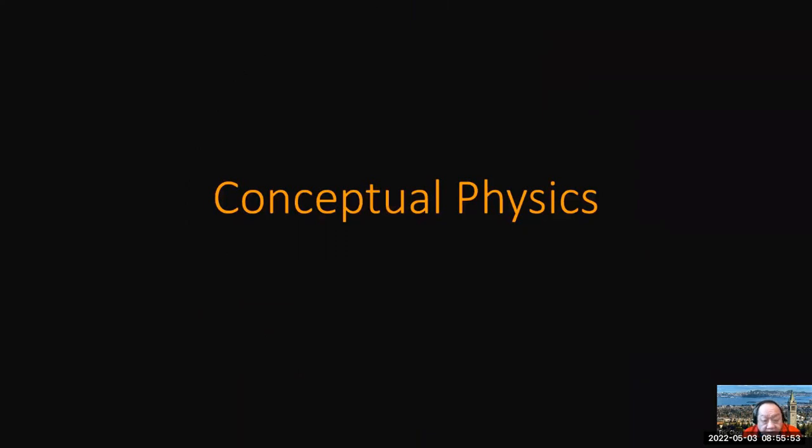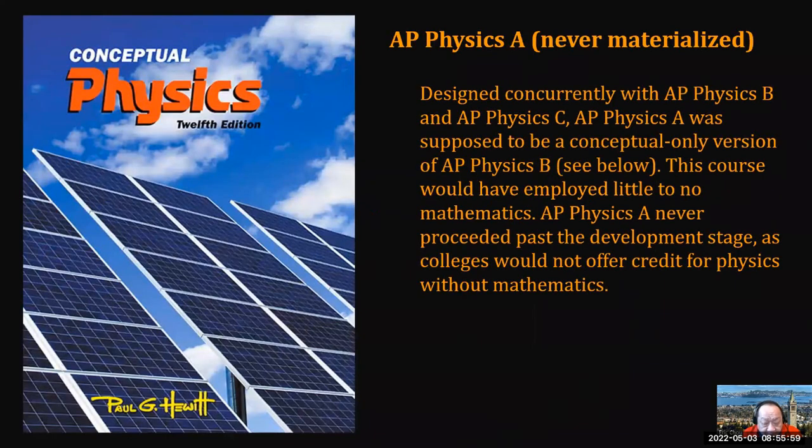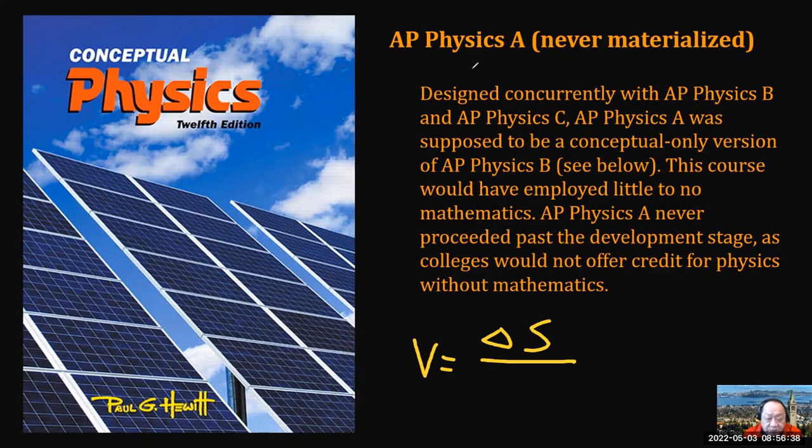The first level of physics taught in high school is conceptual physics. Conceptual physics does not involve too much mathematics. So there was a proposal for AP Physics A, but this exam never been materialized. That means AP Physics A was never really tested in the AP exam. It was designed concurrently with AP Physics B and AP Physics C. But AP Physics A was supposed to be conceptual only. That means they don't require you to have heavy calculation. They just need you to calculate very simple ideas such as velocity equals delta distance displacement over time.